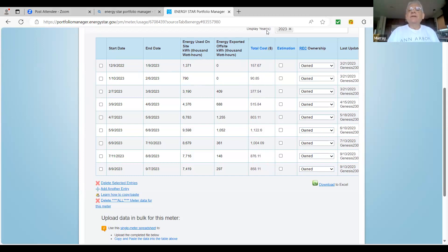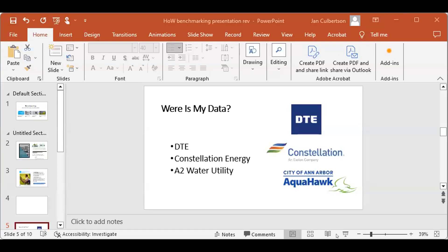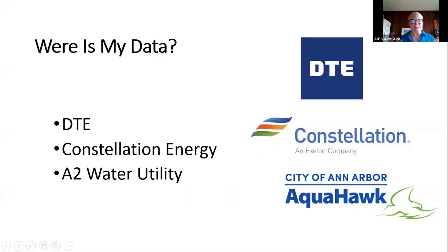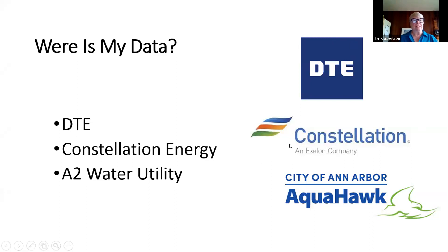Jan mentions there's a way to do some of this automatically. The 2030 District has three sources of data: one is from DTE — most people have power and gas from DTE. Some folks get Constellation Gas, which can't be automated, but they provide an Excel spreadsheet that makes it easy to upload into Energy Star. We can also get data from the city of Ann Arbor AquaHawk.